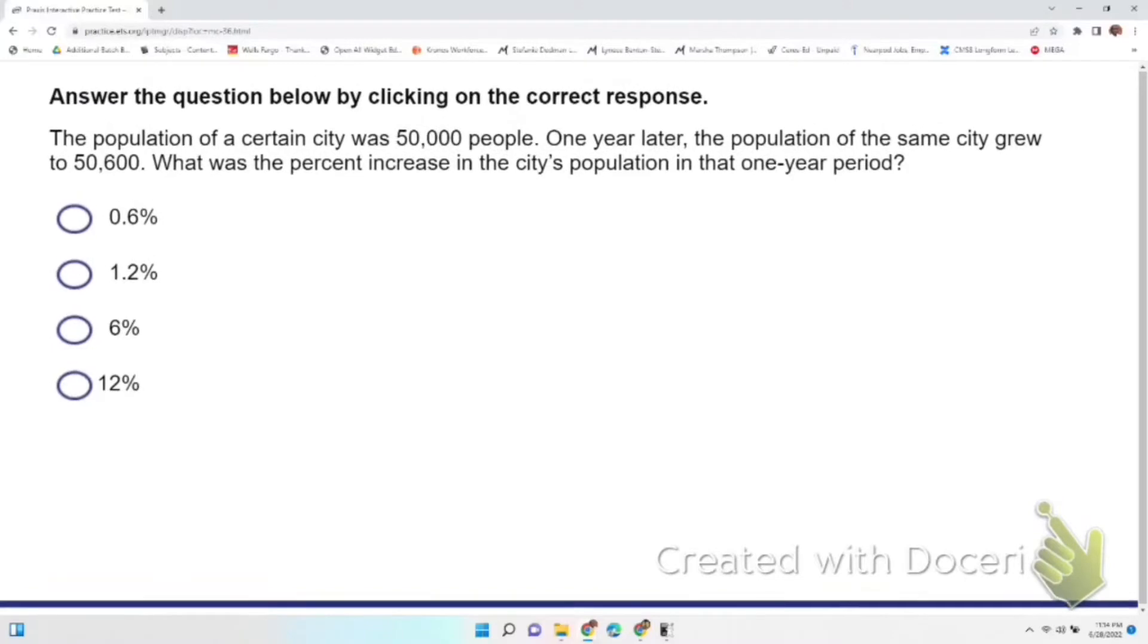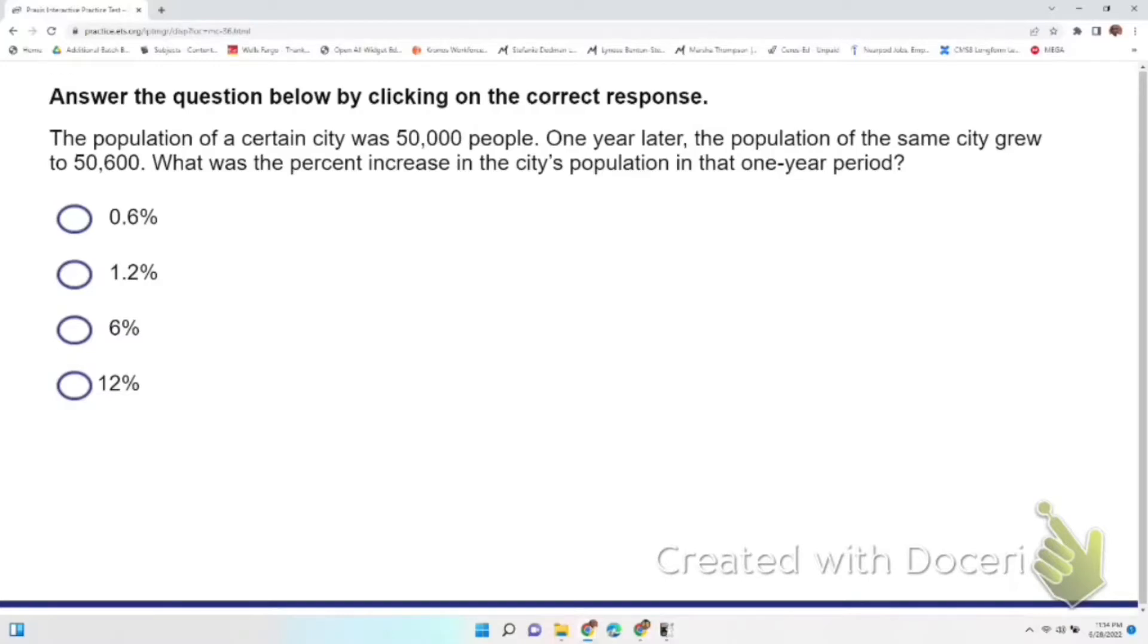Number 36: The population of a certain city is 50,000 people. One year later, the population of the city grew to 50,600. What is the percent increase in the population of the city in that one year period? All you have to do here is divide your new population growth by your old population growth.